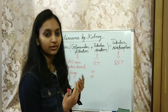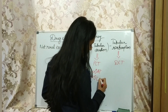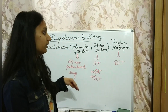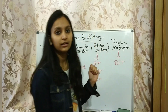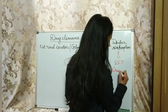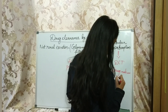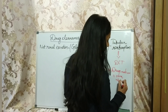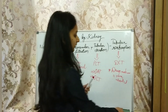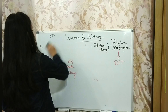Tubular secretion happens in the PCT (proximal convoluted tubule) and it doesn't happen by itself — it requires transporters. The two important transporters are organic anion transporters and organic cation transporters. Tubular reabsorption happens in the DCT (distal convoluted tubule), where if the drug's medium matches, it gets reabsorbed.